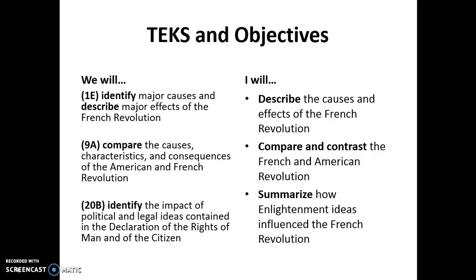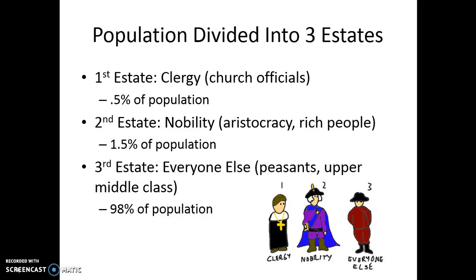First, let's discuss what the social classes in France looked like before the French Revolution broke out. The population was divided into three different classes known as estates. In the first estate you have the clergy — those are your church officials — and they only make up 0.5% of the population, but they make all of the political decisions together with the king. Beneath that you have the nobility — those are your rich people, your landowners — they make up the second estate and are only 1.5% of the population. The remaining 98% of the population, everyone else, was made up of peasants and upper middle class in the third estate.